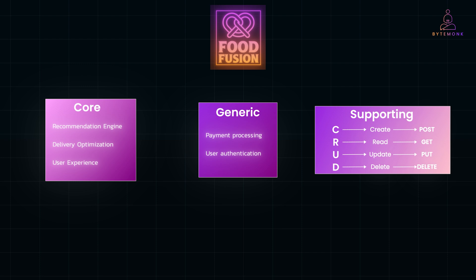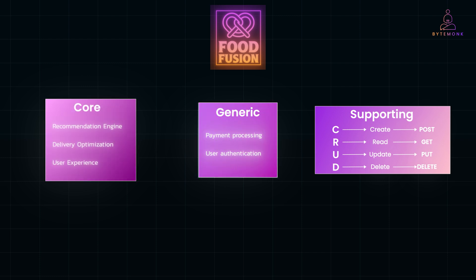Now let's see how this classification influences design decisions. Core subdomains demand in-house development with advanced tools and top talent to maintain innovation. Generic subdomains can rely on off-the-shelf solutions for efficiency. And supporting subdomains, being less critical, can use simpler tools or even be outsourced, allowing the company to focus resources where they matter most.